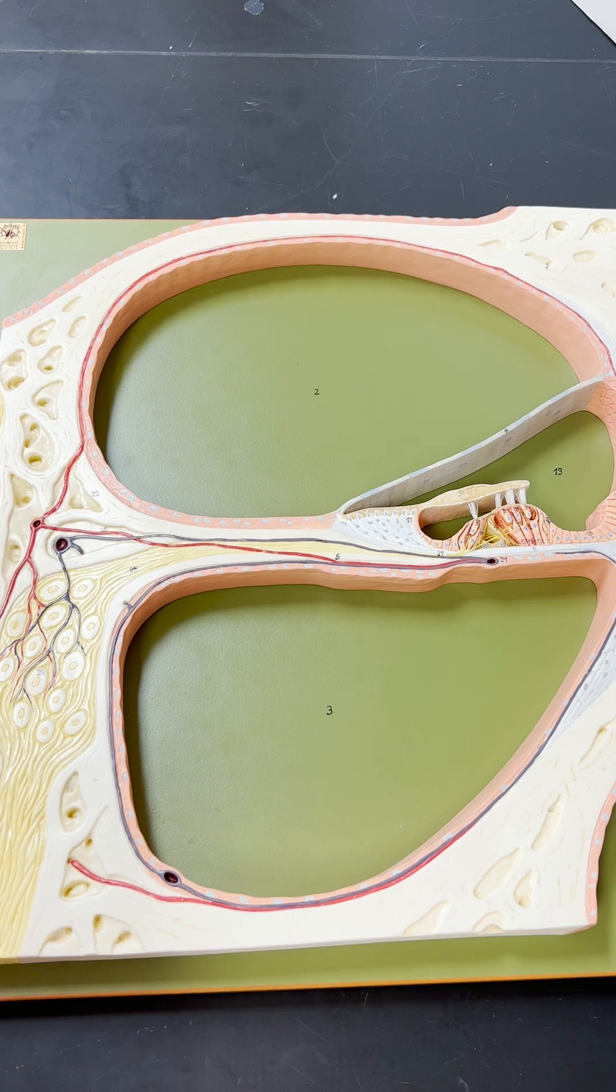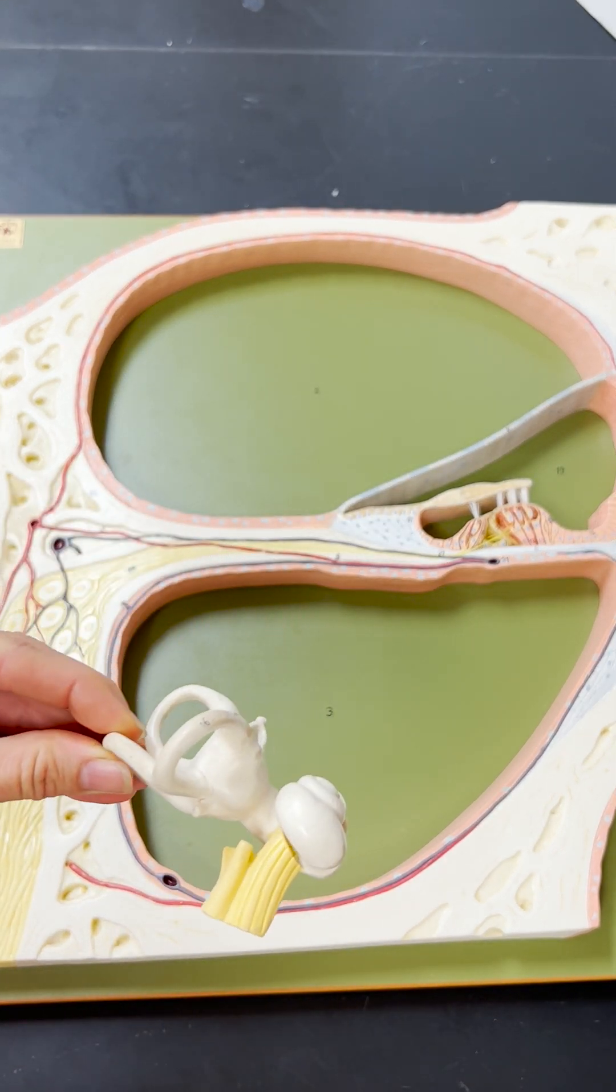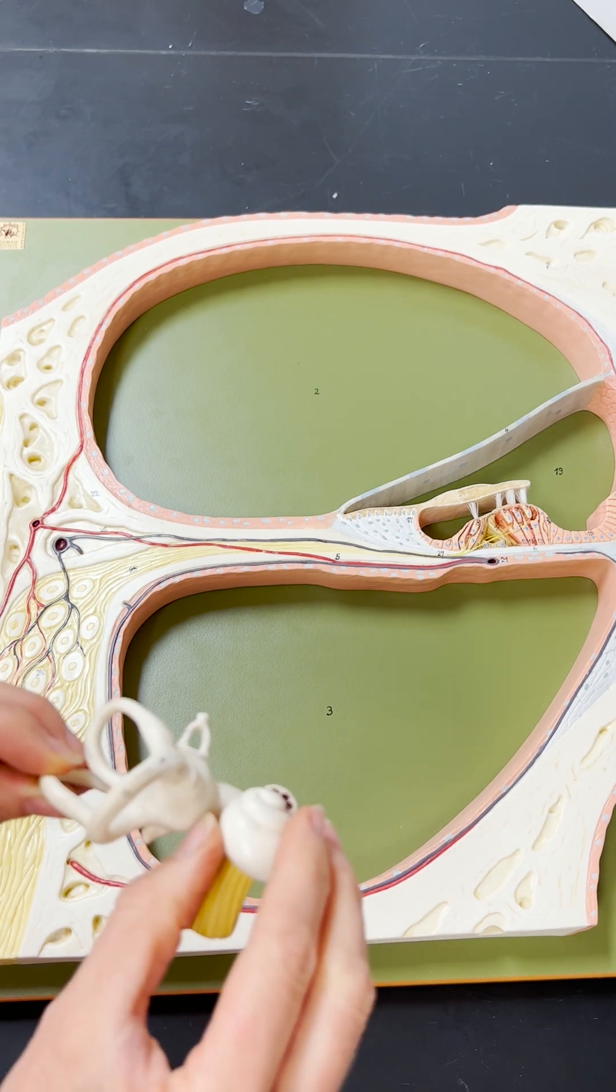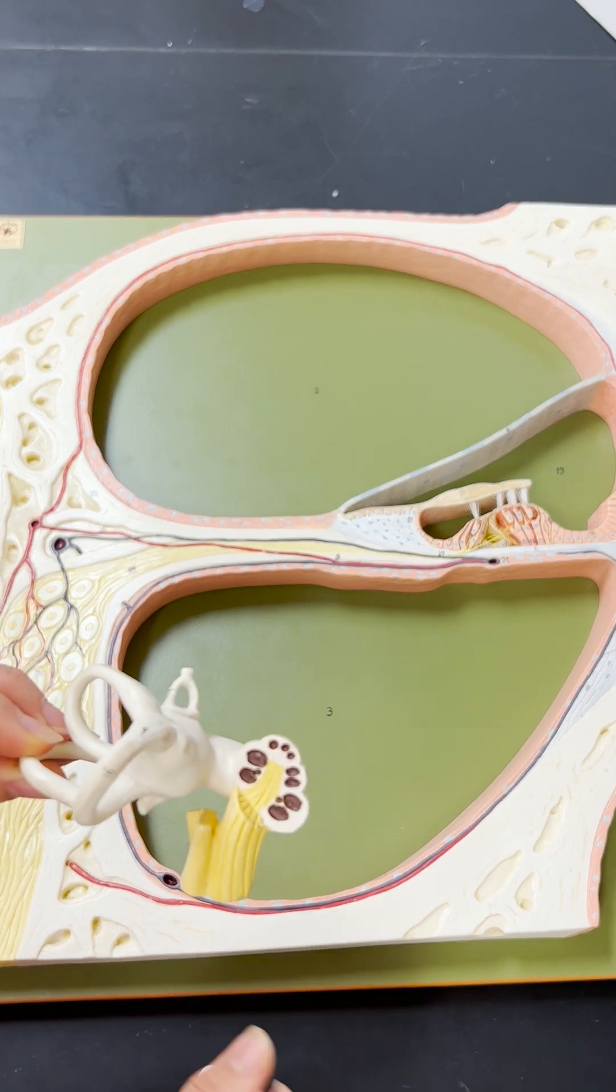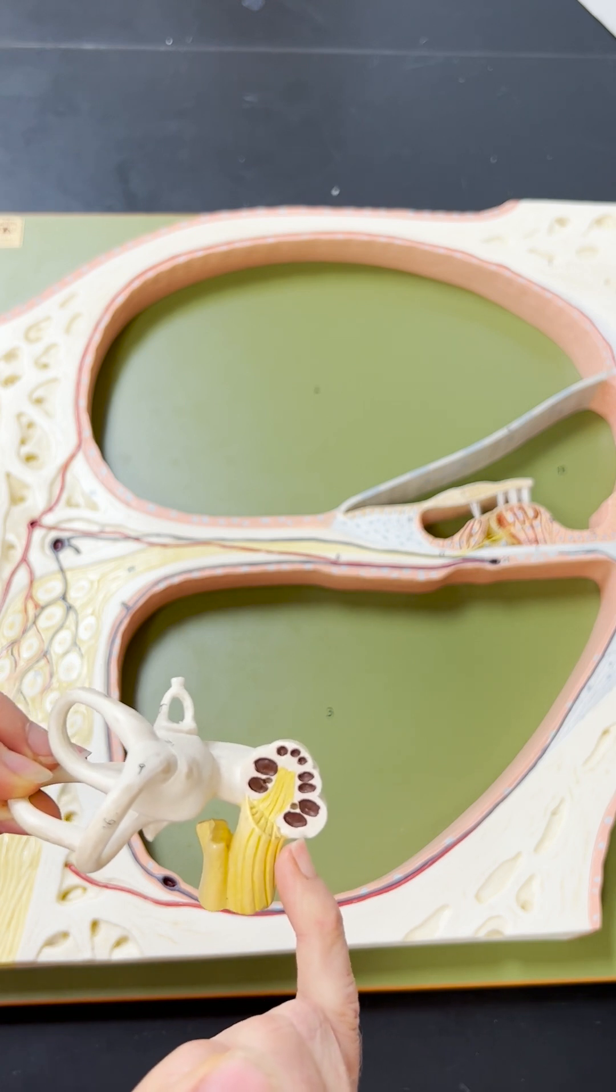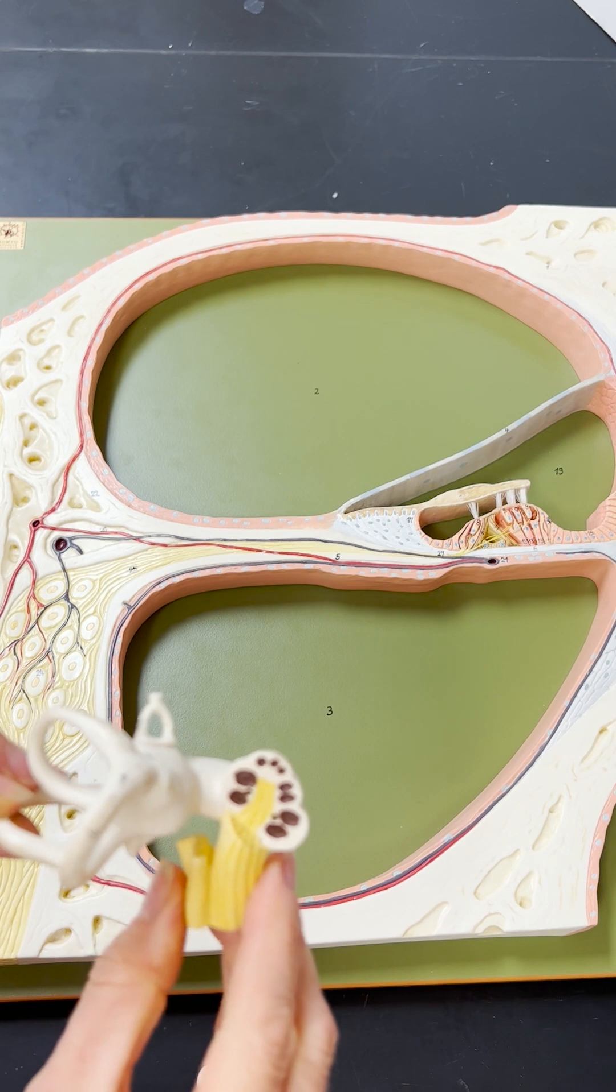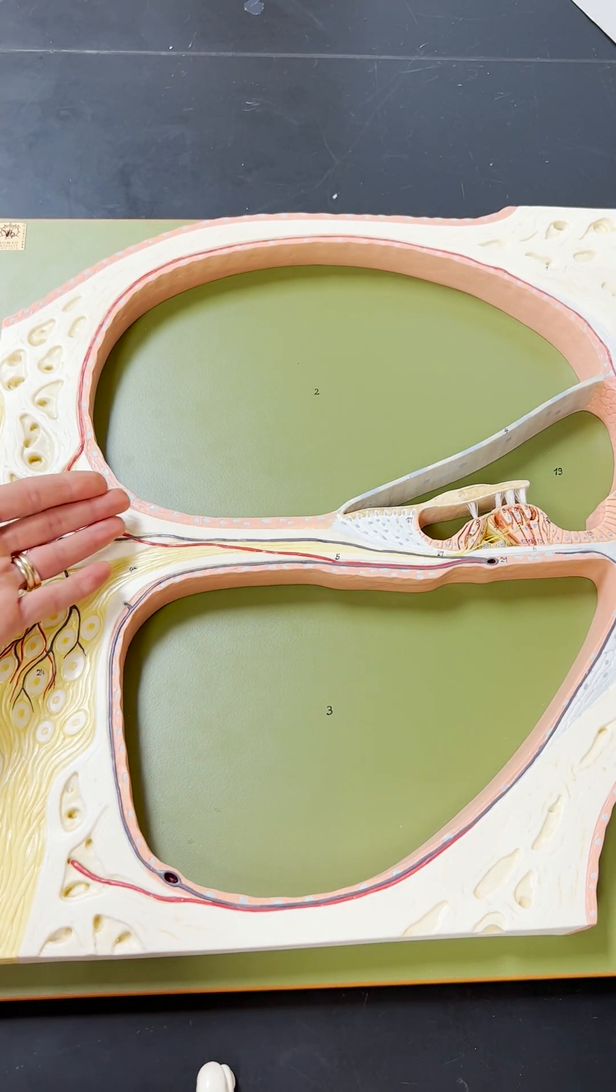So just for recall, this is the cochlea. And we are going to be looking at the inside of it. One of these circles right here represents this particular model.